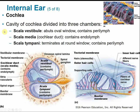In cross-section, the cochlea is divided into three chambers. The scala vestibuli and scala tympani are filled with perilymph. The scala media — the middle duct — contains endolymph, which flows within the chamber to excite the hair cells on the sensory receptors, which are connected to sensory neurons.